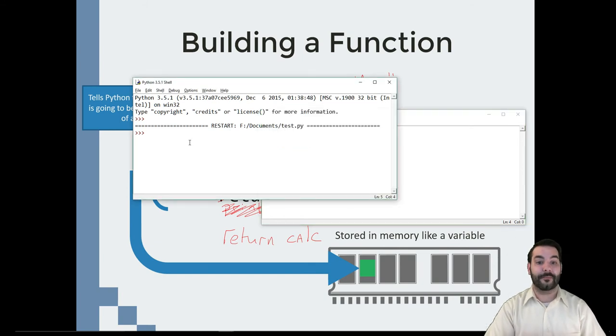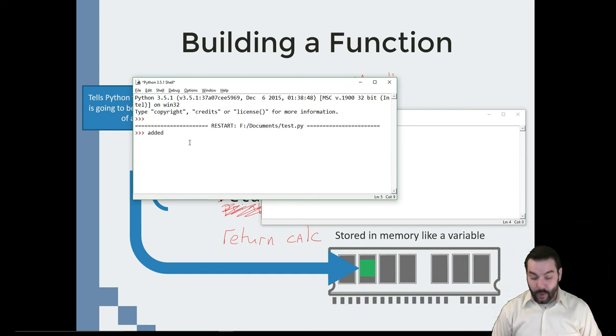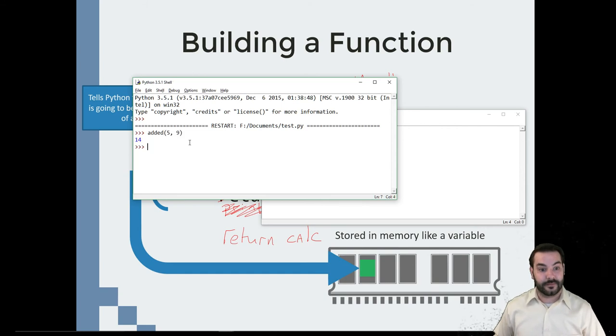And now what that means is I have access to it. I can actually call it how I want. Now you see I named mine added. And if I open up those parentheses, you can see it's expecting an I1 and an I2. So if I gave it, say, 5 comma 9 and close that out, I see I get 14. But this is where it's very beneficial because I can come in and change these. Maybe I do 50 and 19, 69.